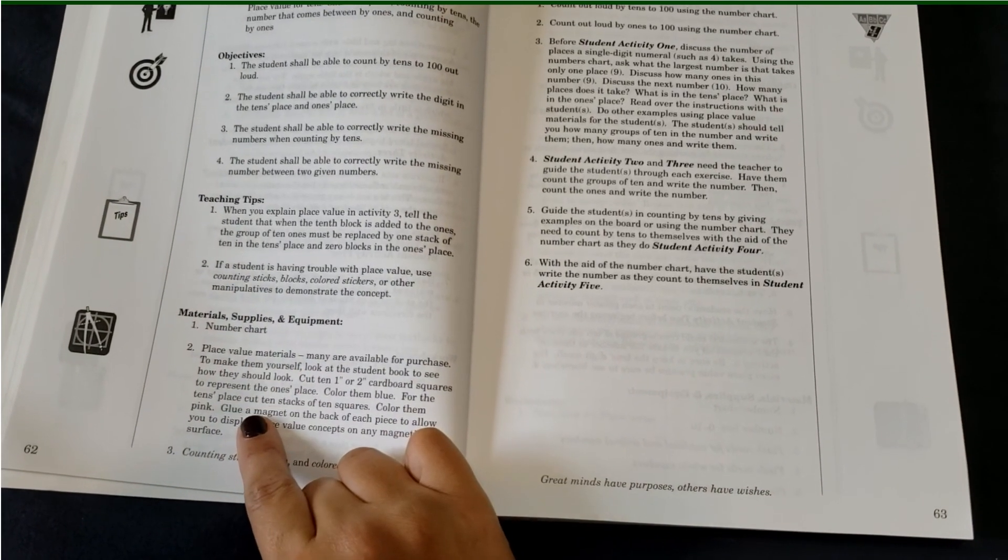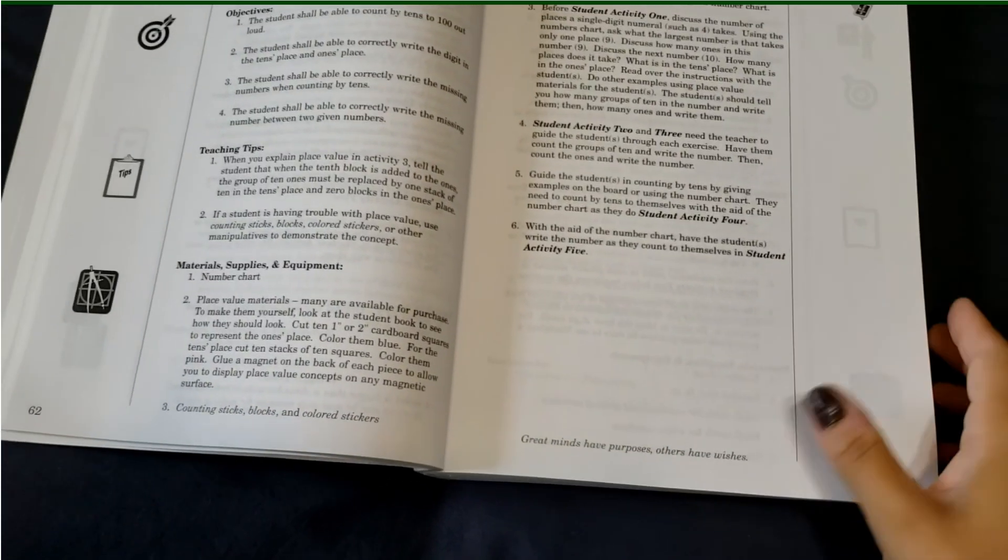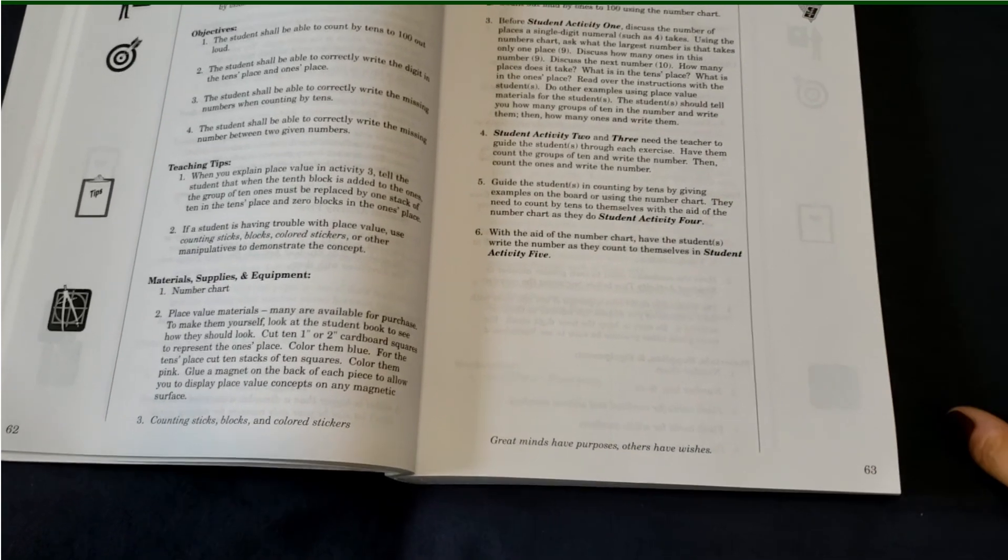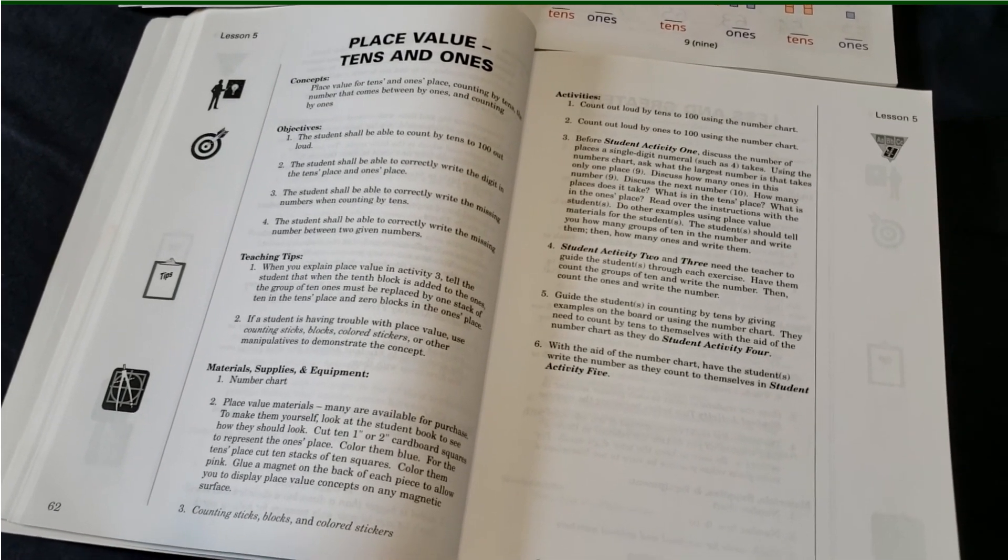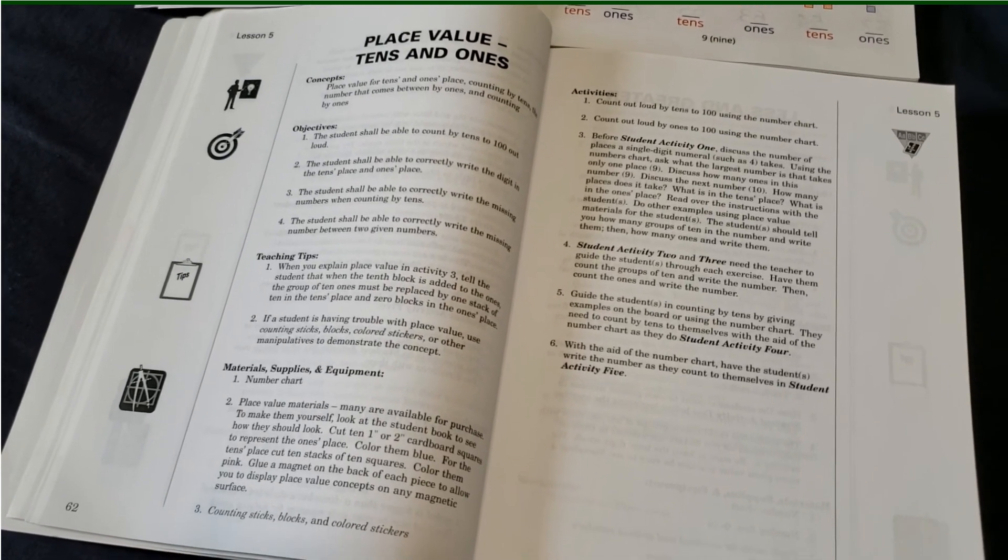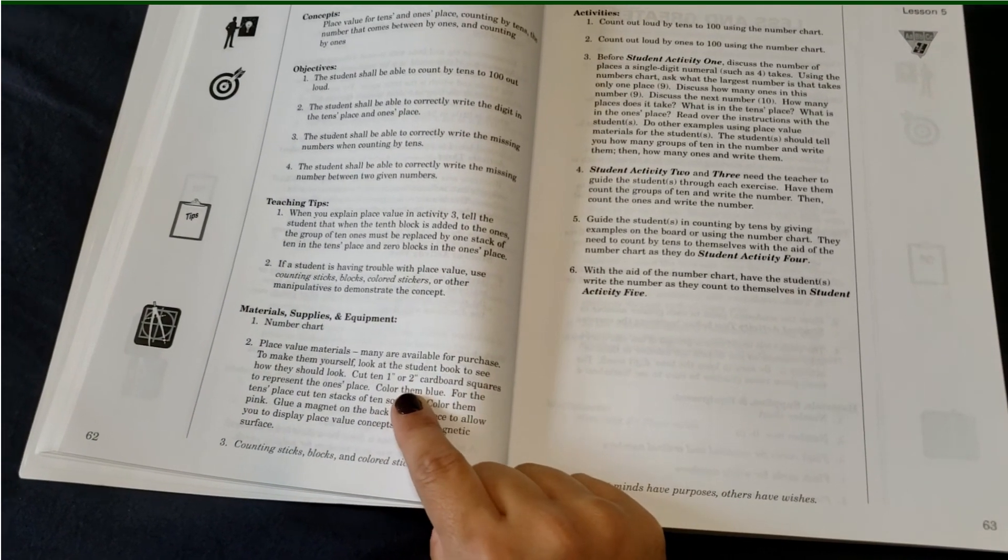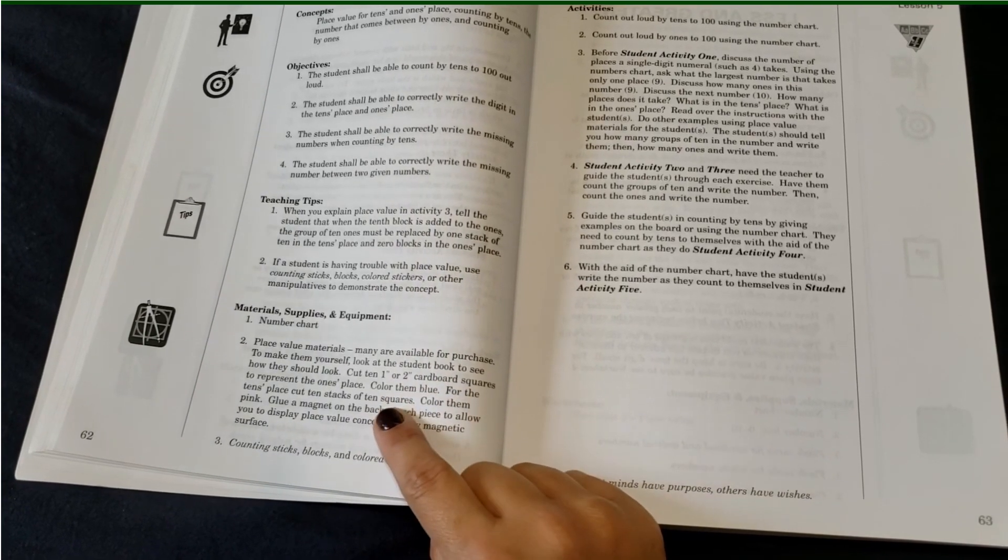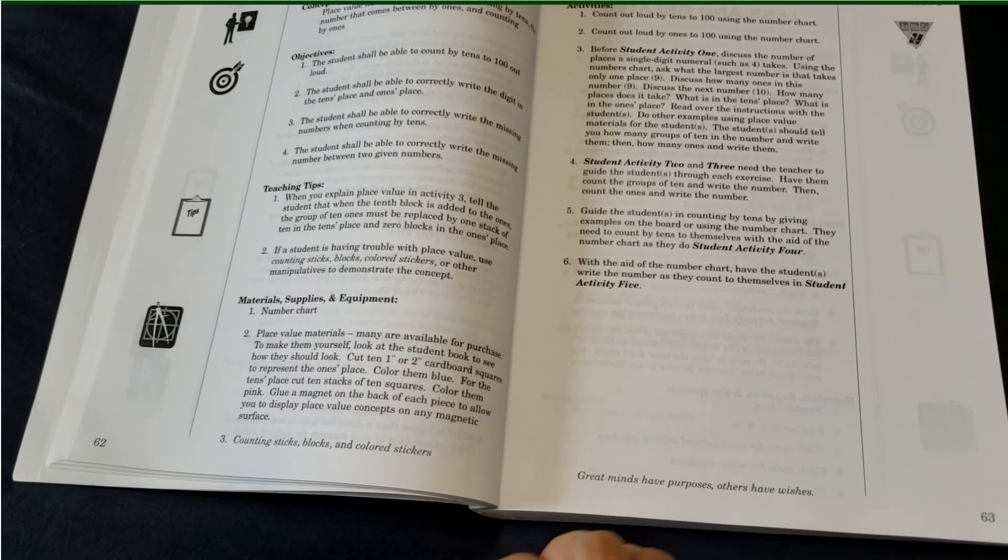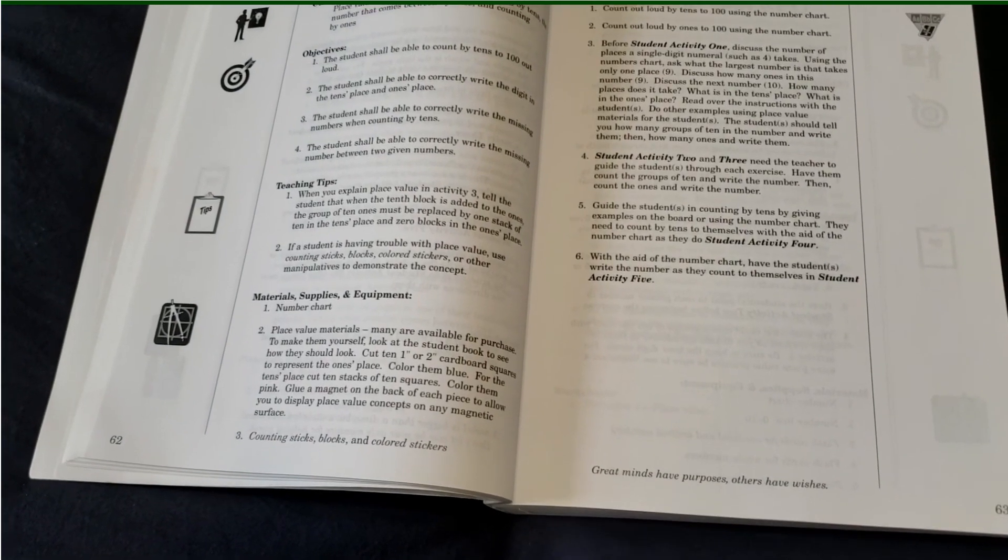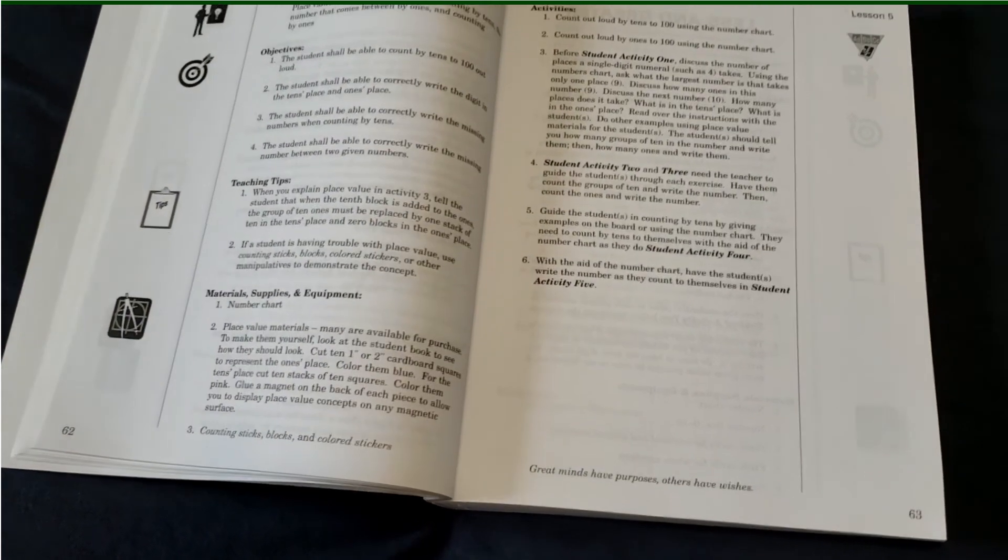Materials, I need my number chart. I need place value materials. So these can be things that you can print off of Pinterest there. I've seen like using place value town to teach. So you have like a house and only nine people can fit in this house. And then when there's 10, you have to move over, you know, to the next house and so on and so forth. It gives you a tip, an idea here that you can use, one inch or two inch cardboard squares to represent the ones place and color them. Then the tens place, you can then like make a grid of 10 squares for your tens place and color them a different color. And then you can kind of maneuver along those for counting. You can also use counting sticks or blocks or colored stickers.